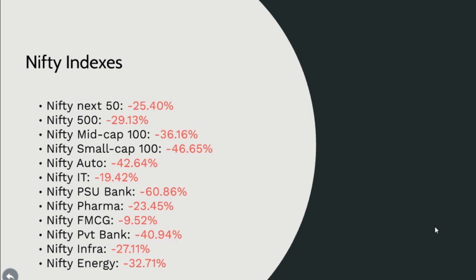Nifty Automobile is down minus 42.62 percent. Nifty IT has eventually survived better because it was based on European countries and the USA — it gave a good return before the last three months, but is still at minus 19.42 percent. This clearly shows that all sectors have been affected due to the economic slowdown, the Yes Bank crisis, and most importantly coronavirus.